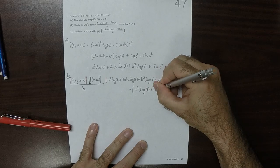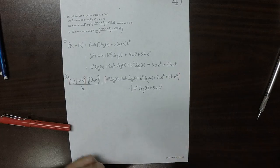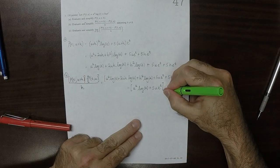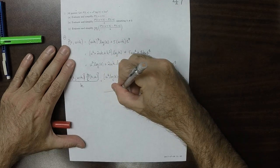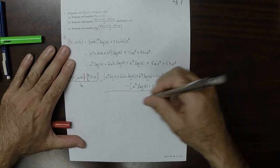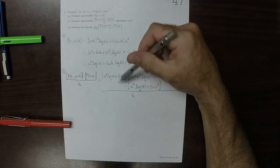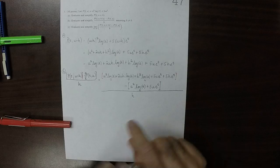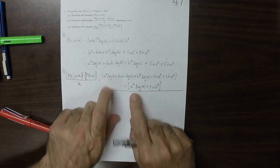So all of that is going to be divided by h. Well, in the numerator, everything that doesn't have an h in it is going to end up getting canceled. So for example, these u squared log t's cancel each other.